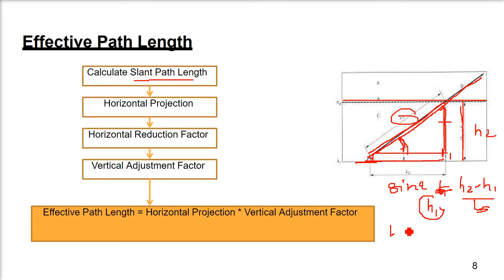This ls is simply equal to h2 minus h1 by sine theta. This is how we find out this length. Then you have to take the horizontal projection, horizontal reduction factor, vertical adjustment factor. This is all given in ITU recommendation. Effective path length can be computed by multiplying horizontal projection and vertical adjustment factor.